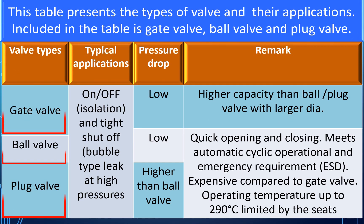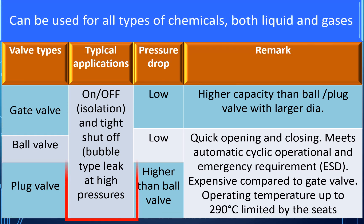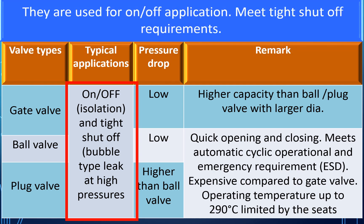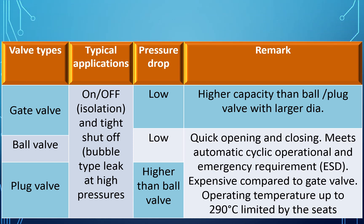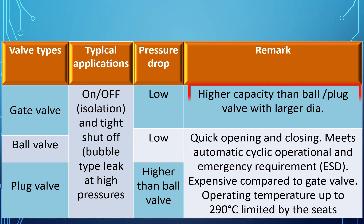This table presents the types of valves and their applications. Gate valve, ball valve, and plug valve can be used for all types of chemicals, liquids, and gases, and are used for on-off applications. They meet tight shutoff requirements. At high pressures, these valves will have bubble-tight leak performance. Gate and ball valves have low pressure drop, while plug valves have higher pressure drop than ball valves. Gate valves have higher capacity than ball valves and plug valves.